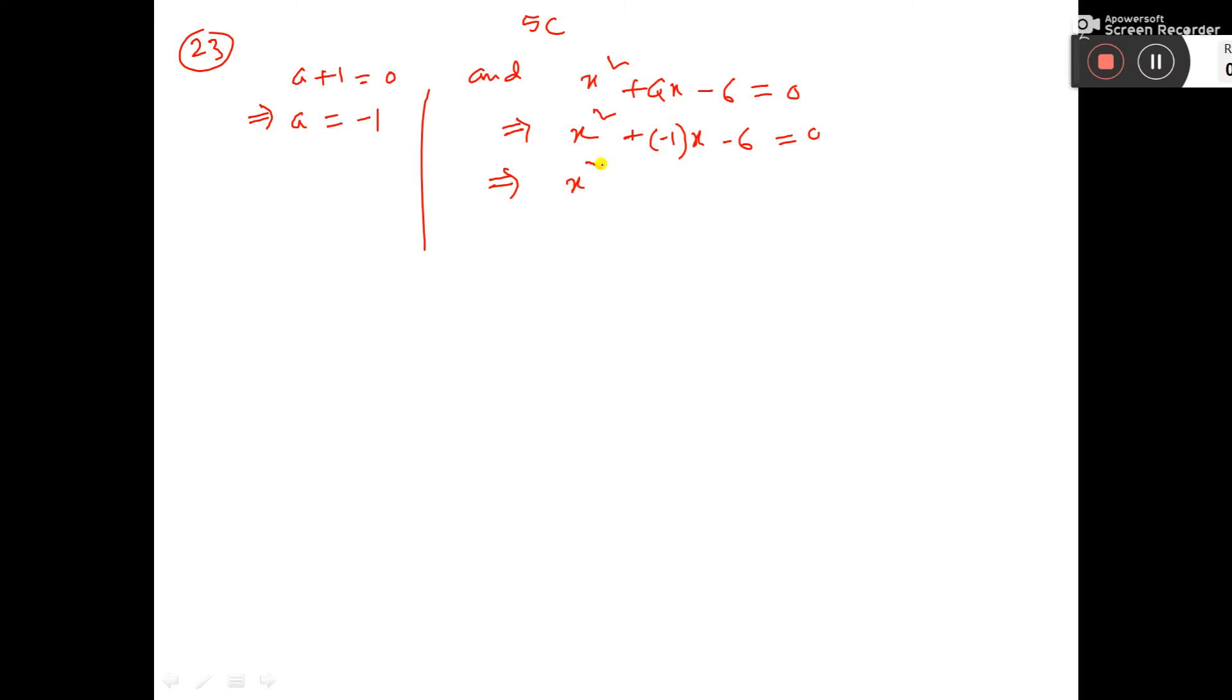So it will be x square minus x minus 6 equal to 0. Now if you simplify this one, you can break it in 3 and 2. So x square minus 3x plus 2x minus 6 equal to 0.